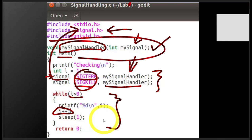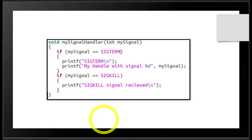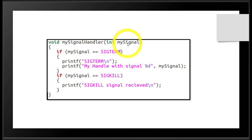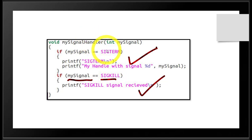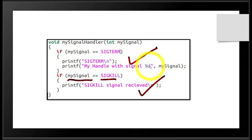Now let's see the definition of this particular function — the custom signal handler, named my_signal_handle. It has two if statements checking a parameter. If that parameter equals SIGTERM, it executes the SIGTERM block; if it equals SIGKILL, the SIGKILL block runs. So this one handler is handling two signals. If SIGTERM comes, it prints a statement 'SIGTERM' and another statement 'my handle with signal', along with the value of the variable my_signal. If SIGKILL comes, it prints 'SIGKILL signal received'. Nothing complicated.